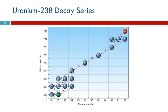You do not have to know this series at all. What I want you to know is that any given radioactive isotope decays into something else, and that something else may very well also be radioactive and decay. Elements are slowly changing into other elements, but this is a very small fraction of what's going on in the whole mass of the earth.